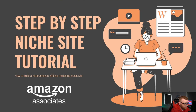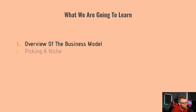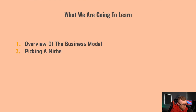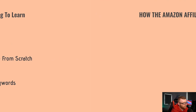This is the step-by-step niche site tutorial — how to build an Amazon niche affiliate marketing website. You can also run ads on these to generate revenue, or run external affiliate offers, but we're going to be focusing mainly on Amazon Associates and also running ads with something like Ezoic or AdSense. First, an overview of the Amazon affiliate blog model. We'll go through picking a niche, building the site from scratch, getting hosting and a domain name, setting up WordPress, installing your theme, and finding good keywords.